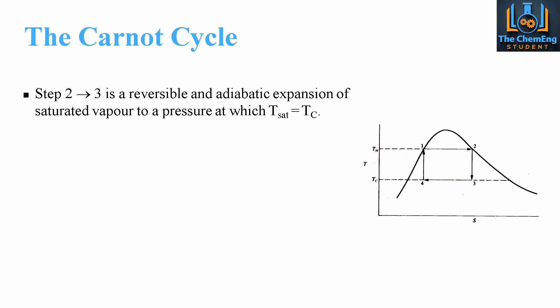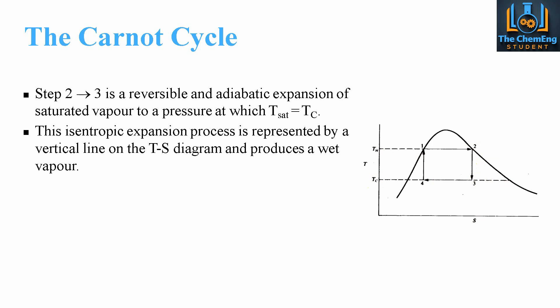Stages two to three is the reversible adiabatic expansion of the saturated vapor to a pressure at which T_sat equals Tc — the temperature for heat rejection. Here we are on the saturated vapor line, meaning no liquid at this point. During the adiabatic expansion, we drop the temperature from Th to Tc while keeping entropy constant, which takes us inside the saturation curve, giving a mixture of saturated vapor and saturated liquid. This isentropic expansion is represented by a vertical line.